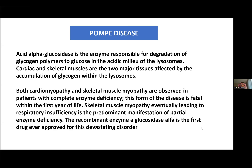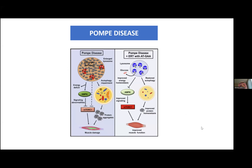The good news is that there is enzyme replacement therapy for Pompe disease that can help alleviate some of these manifestations. On the left side you see Pompe disease: if there is a failure of the enzyme, there will be an accumulation of glycogen impacting the AMPK pathway, causing signaling abnormalities and autophagic impairment. With enzyme replacement therapy, we try to clear the glucose from the cells, and then the muscle will have improved function.